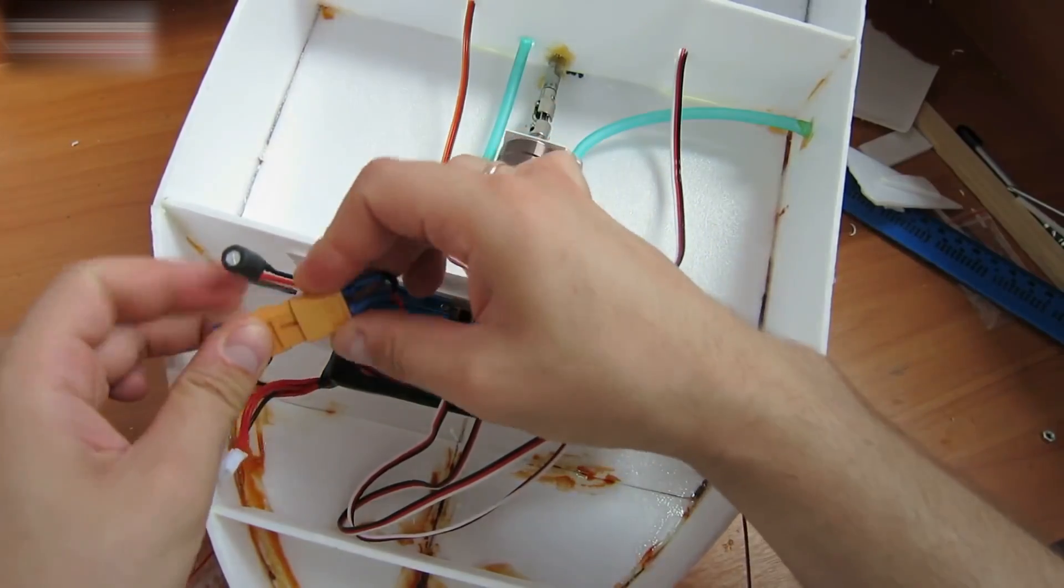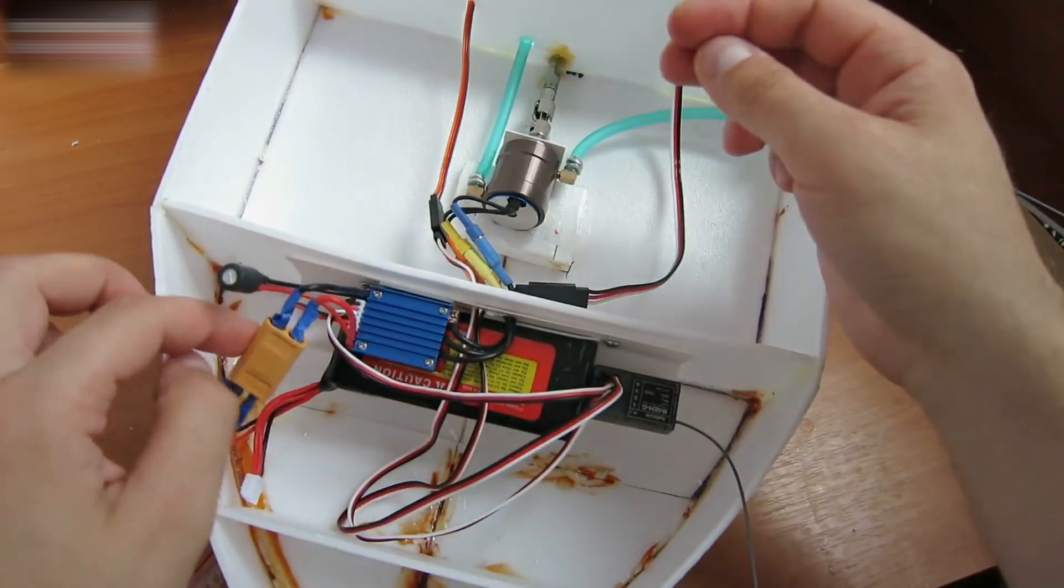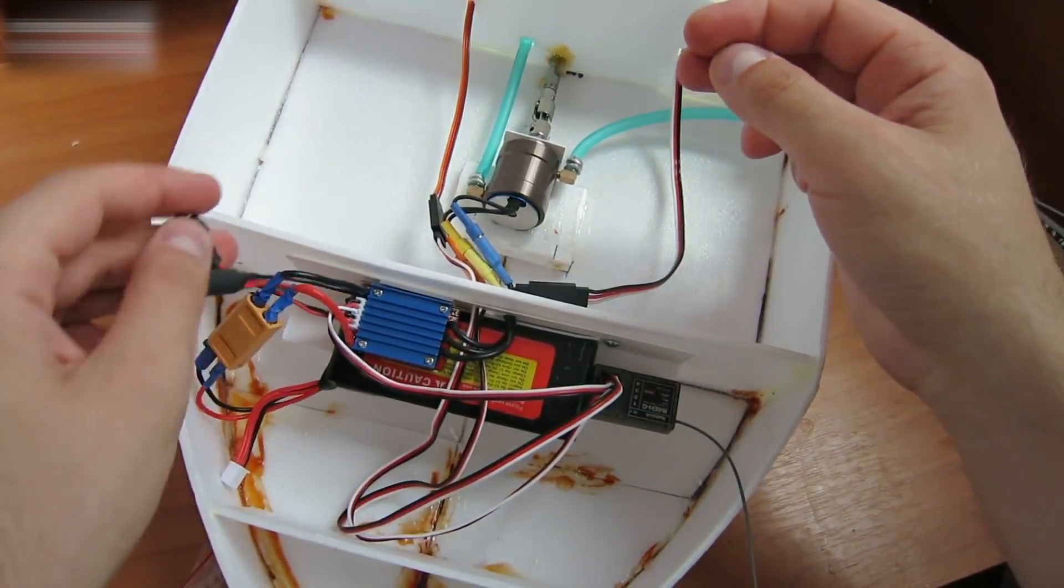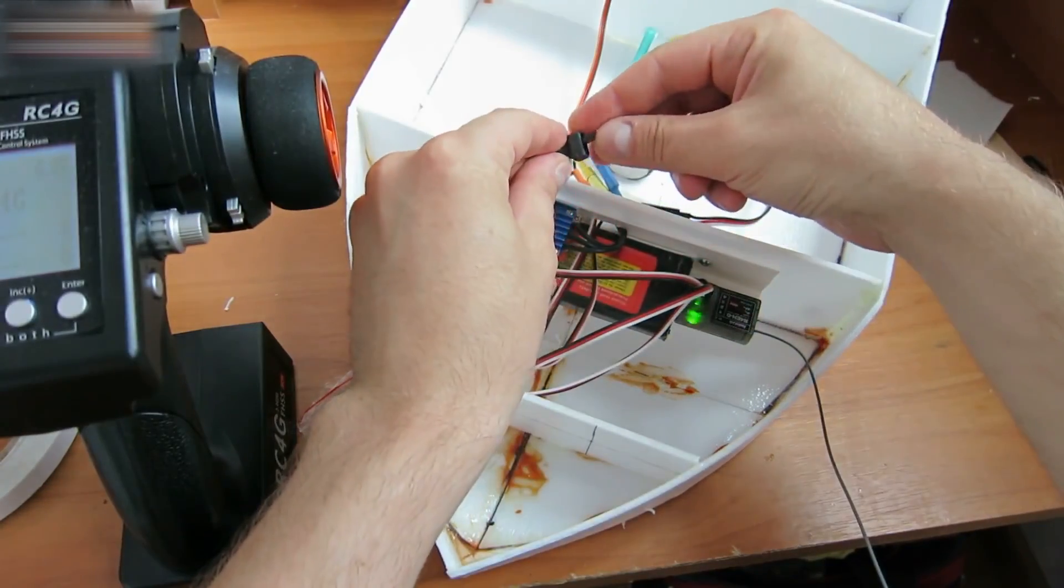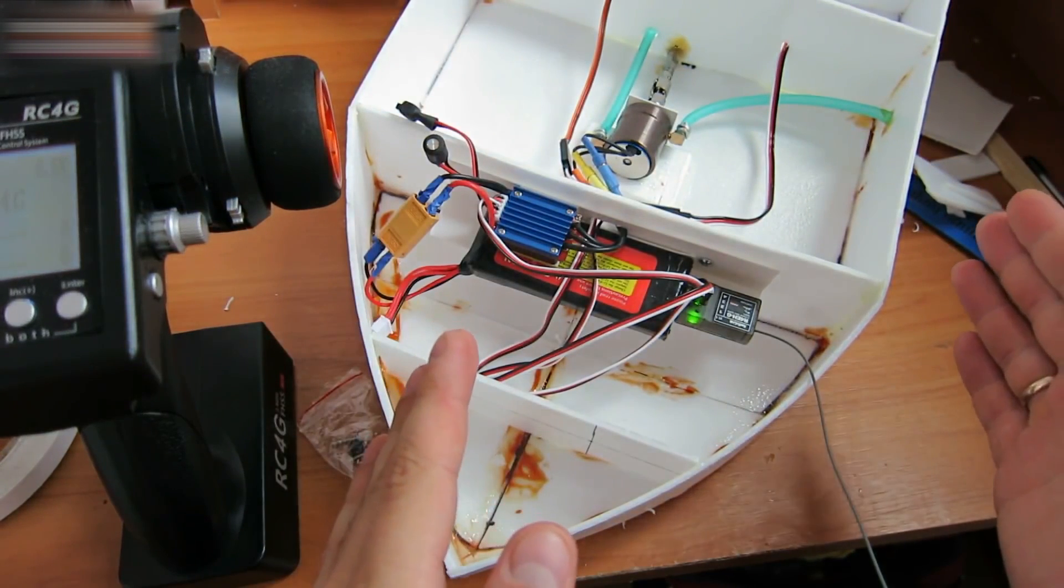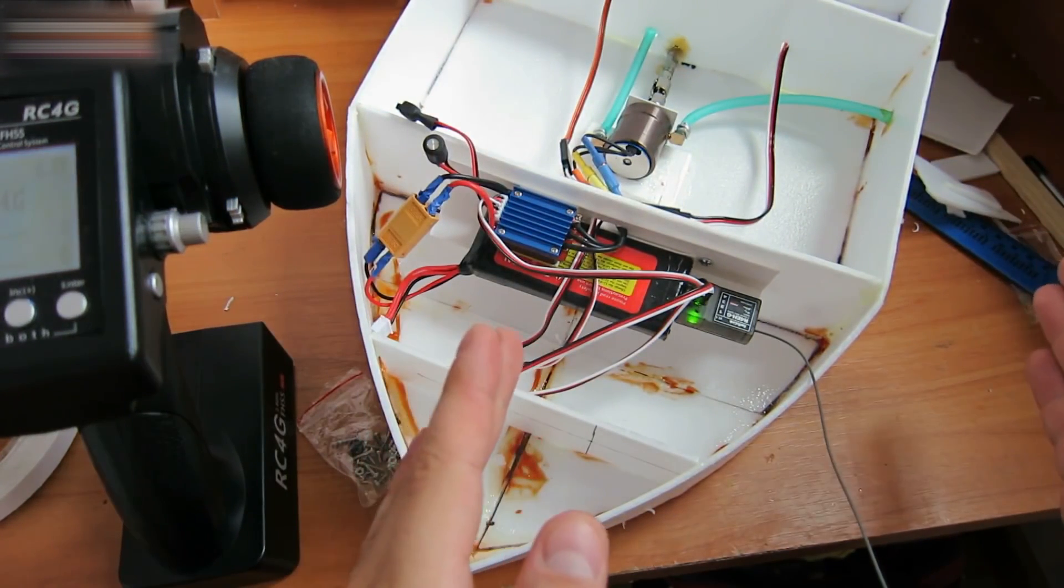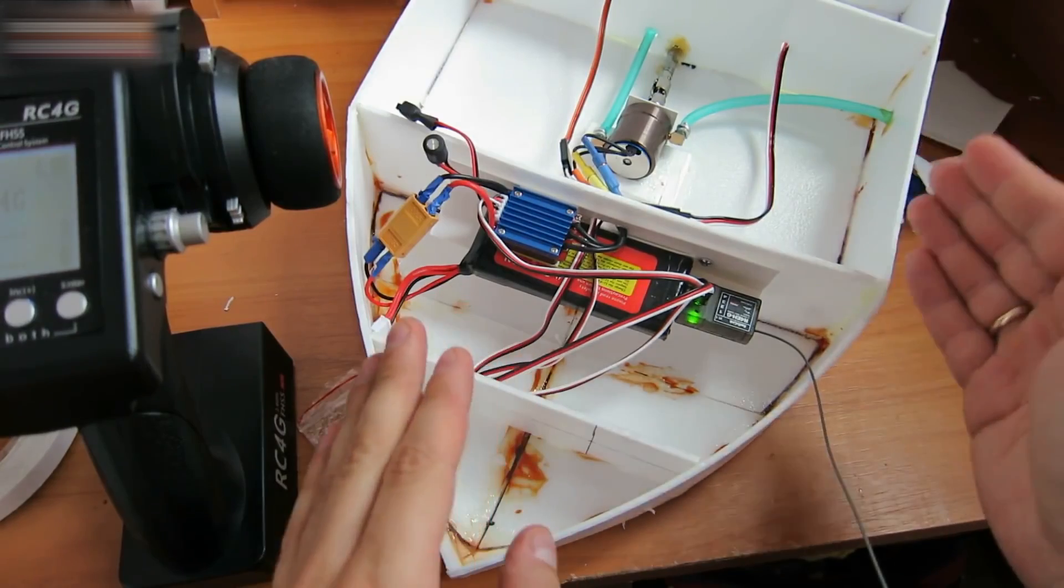Connect the power. Now for the lights. Turn on the switch. The servos are in their regular positions. Now we can turn it on and check how it's working.